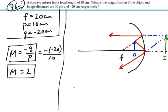So everything checks out. We have an image upright, magnification of two, a negative image distance. That all makes sense. So looking good.